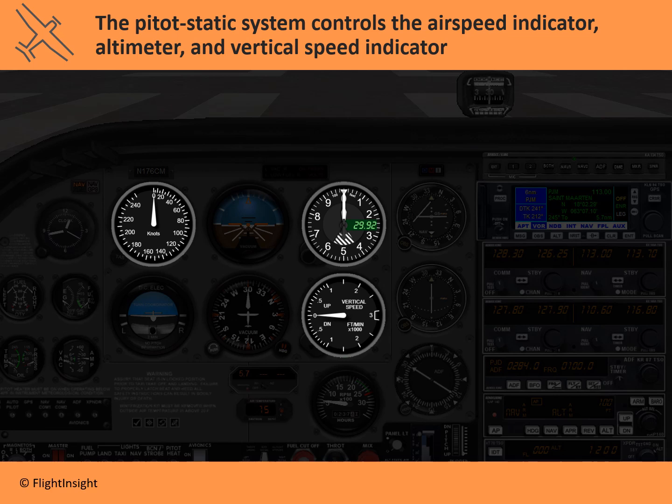The three pressure instruments out of the six primary instruments — the six-pack — are the airspeed indicator, the altimeter, and the vertical speed indicator. They work off of changes in air pressure. That air pressure is directed into the instrumentation system through the pitot system. You have the static port, oriented away from the relative wind — usually to the side — and the pitot tube, which is oriented into the relative wind.